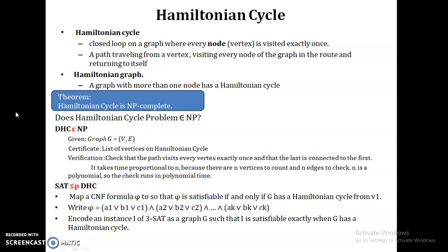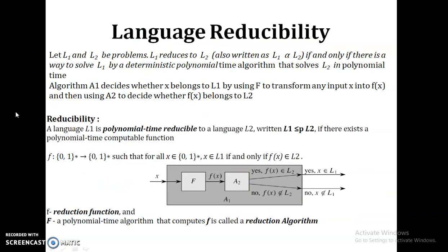Now we have to prove whether this problem can be reduced using some other problem. We are going to use the Boolean satisfiability problem, which is already known to be NP-complete, to reduce to the Directed Hamiltonian Cycle (DHC) problem. Recall language reducibility: a language L1 is polynomial-time reducible to a language L2 if there exists a polynomial-time computable function mapping inputs of L1 to inputs of L2.